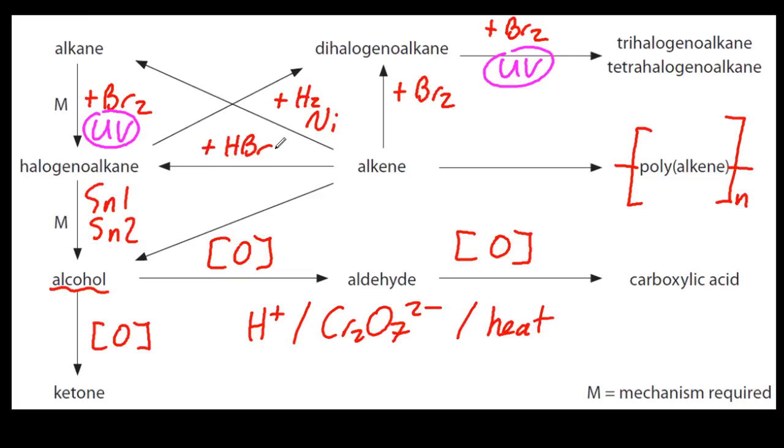That one's adding HBr. And that one's adding water, sulfuric acid catalyst. The IB likes that one. Alkene to alcohol. Because then it's easy to do another step after that.